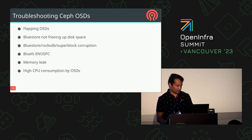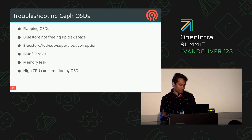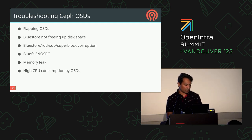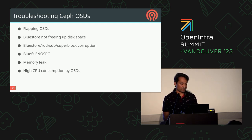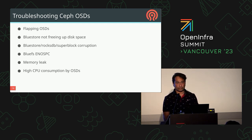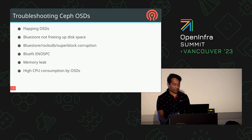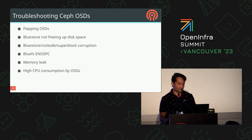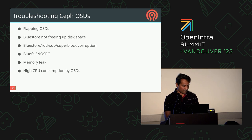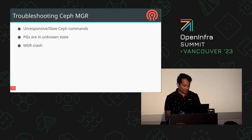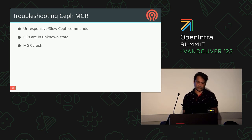For memory leaks, it could be a configuration issue or a real memory leak. We haven't seen much high CPU consumption since Nautilus, but there's a possibility due to some OSD-level tunings. For high CPU issues, you need to use the perf tool, or even the wall clock profiler implemented by Mark Nelson, or the newer oprofile tool.